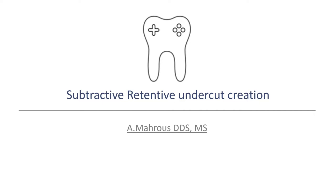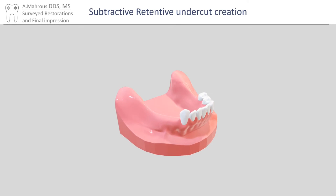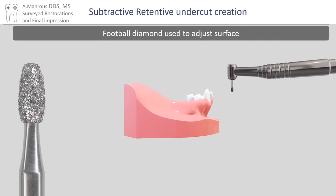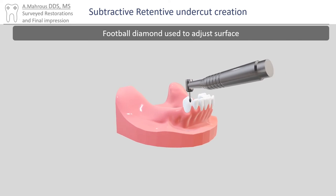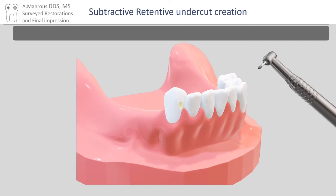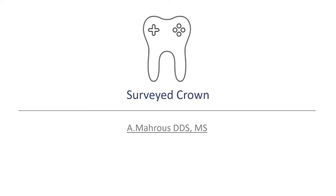Now let's move on to the subtractive method. It is often inconvenient to undergo the additive undercut creation as it requires more than one appointment. The subtractive method requires the use of a football diamond. A small enameloplasty is made in the area where retention is needed. This is called a dimple, and it creates enough undercut for retention.